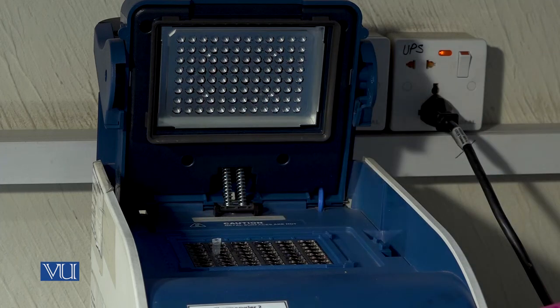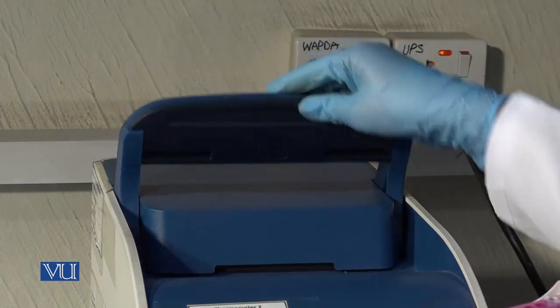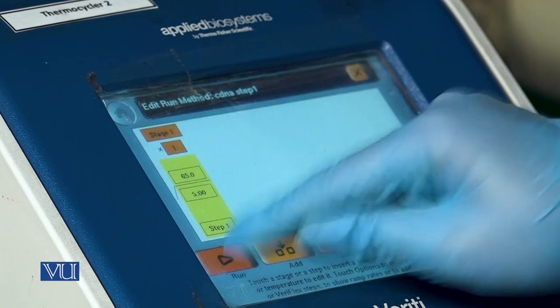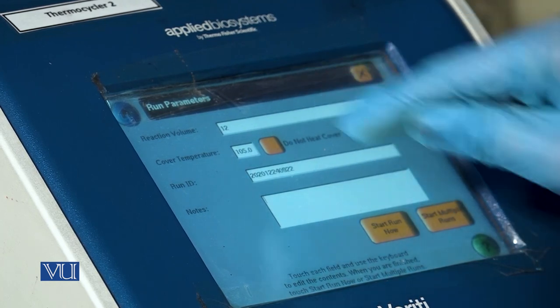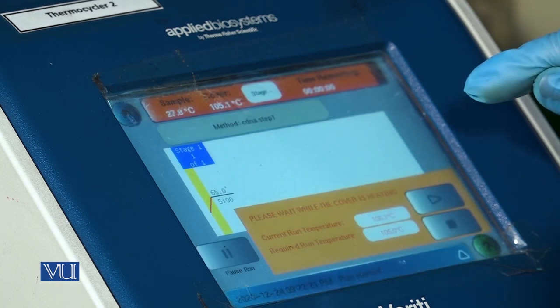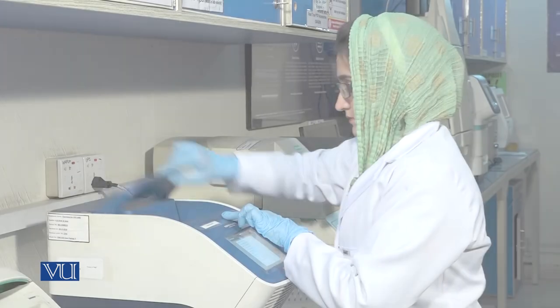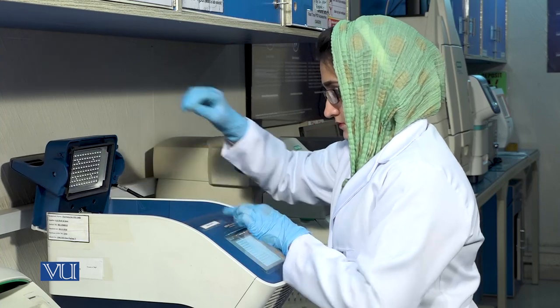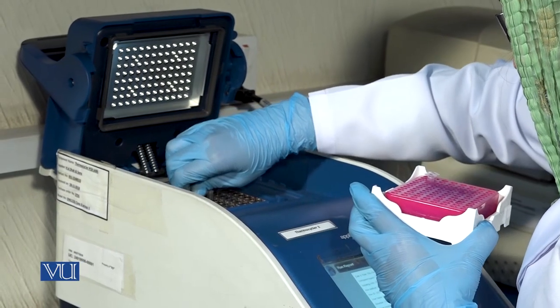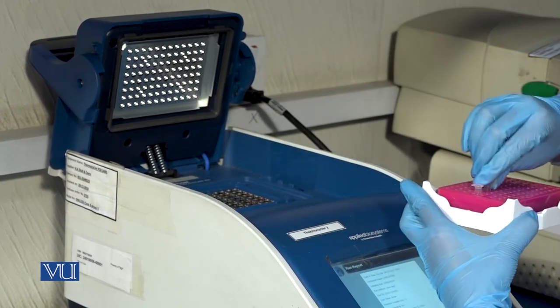Place the PCR tubes in the thermal cycler for the first step and close the lid of the thermal cycler. After setting all the required conditions, start the incubation. Take out the PCR tubes and immediately place the tubes on the cooling rack.